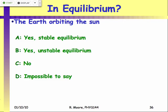How about this: we're on the Earth and the Earth is orbiting the Sun. Is the Earth in stable equilibrium, unstable equilibrium, not in equilibrium, or is there not enough information to determine?